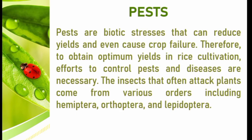Pest control has also been developed chemically with the use of pesticides. Pests are biotic stresses that can reduce yields and even cause crop failure. Therefore, to obtain optimum yields in rice cultivation, efforts to control pests and diseases are necessary. The insects that often attack plants come from various orders, including Hemiptera, Orthoptera, and Lepidoptera.